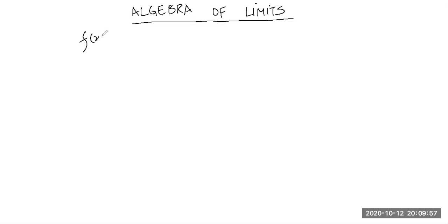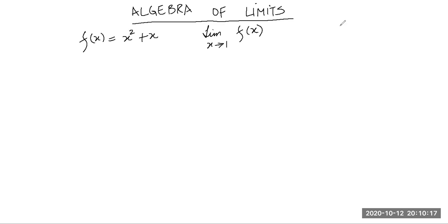Let's take a function f(x) = x² + x. Let's try to find out the limit of this function at x = 1. We know that we find the left limit and the right limit, and if both limits converge, we say that the limit is defined and then we make a guess that this is the limit. So we want to find the limit of this function at 1.